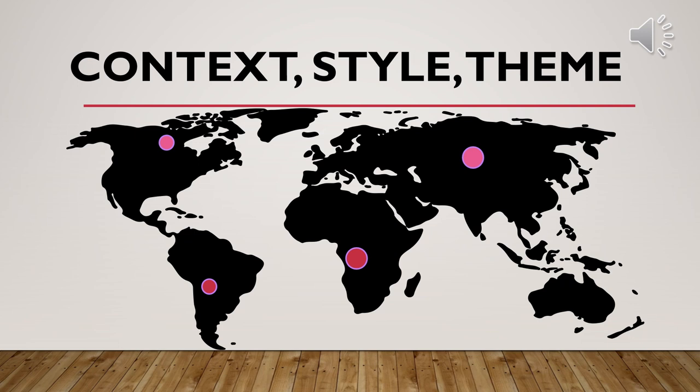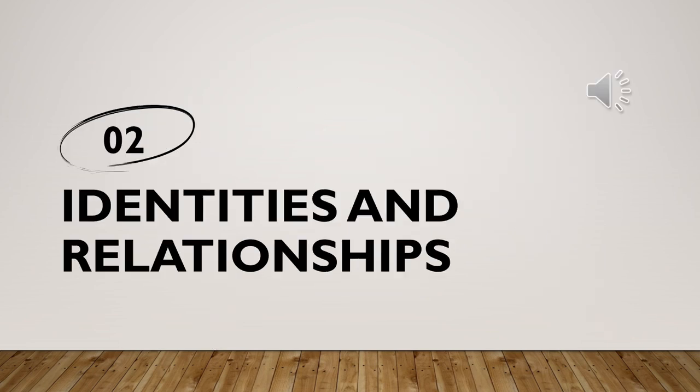Moving on to the next important part: communication and setting. These refer to the exchange of information, ideas, emotions, and thoughts between individuals or groups. The setting itself plays a crucial role in influencing how characters communicate and interact with each other. Cultural norms, expectations, and the physical surroundings of a particular setting can impact the way characters express themselves verbally, non-verbally, and even through their actions.